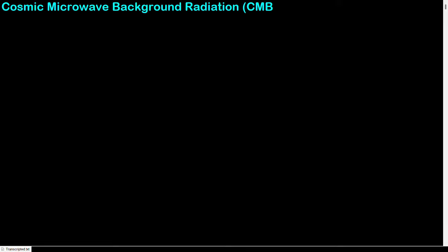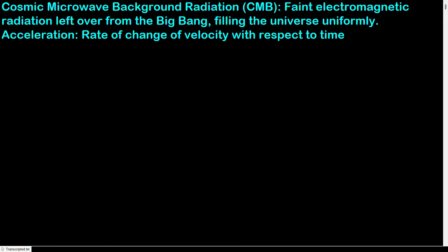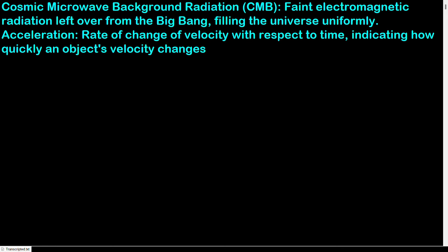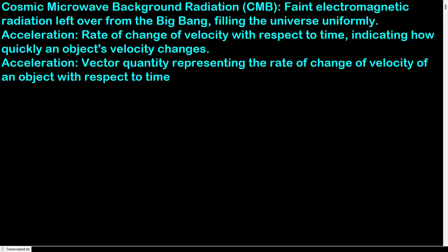Cosmic microwave background radiation (CMB): faint electromagnetic radiation left over from the Big Bang, filling the universe uniformly. Acceleration: rate of change of velocity with respect to time, indicating how quickly an object's velocity changes — a vector quantity.